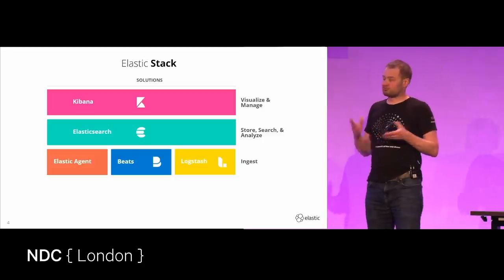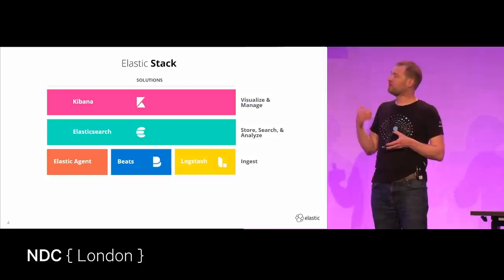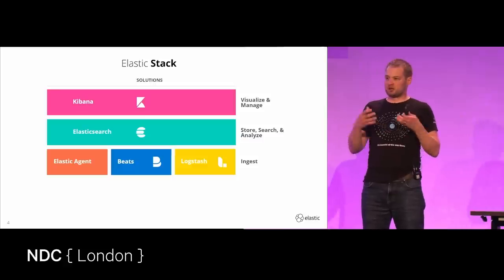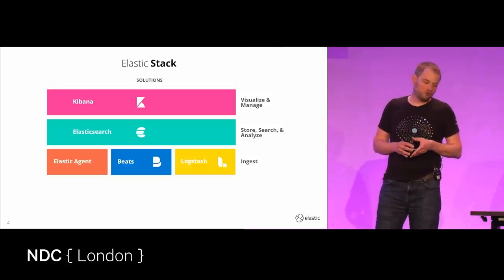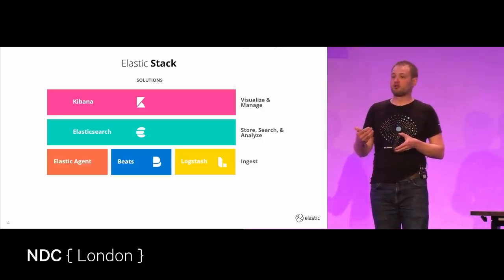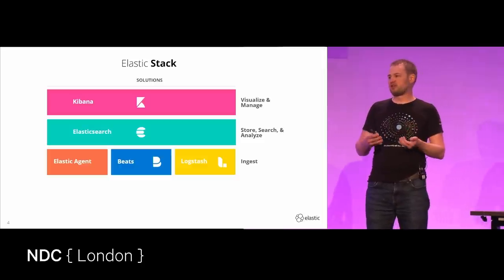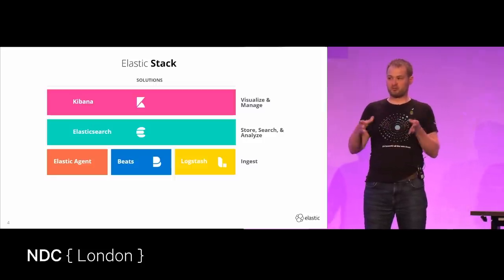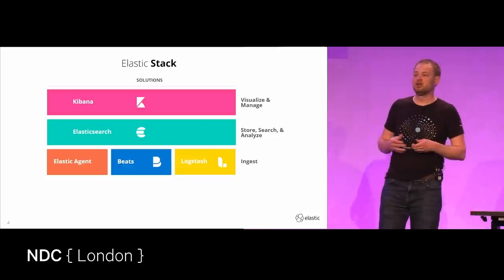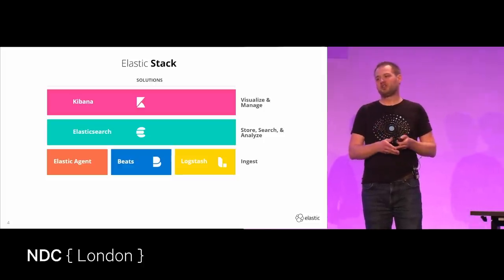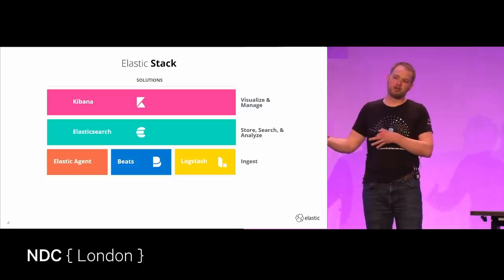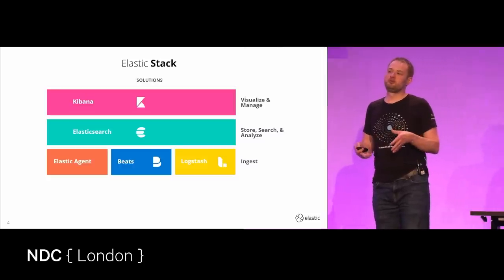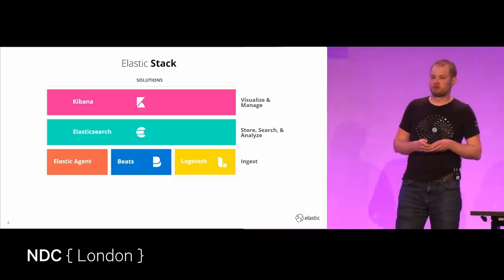Finally, we have Logstash. As the name suggests, it's about log data. You point it at a directory containing log data, and it scrapes, parses, processes, and stores it into Elasticsearch. We have pipelines for common log file formats, and it's extremely extensible. You can build your own pipelines, determine how data gets processed, which pieces you care about storing, and even do enrichment like geo IP lookups as part of the ingestion pipeline.